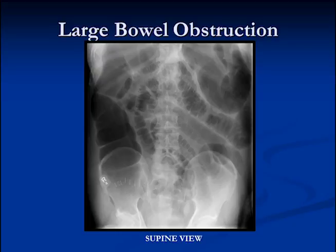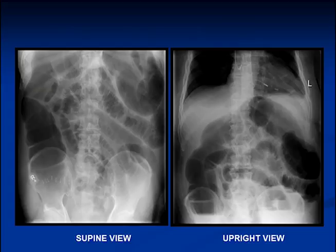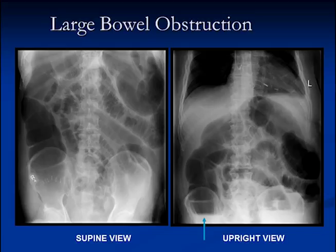The next case is a large bowel obstruction. Here you can see lots of distension of loops of small bowel and large bowel all the way around. There's no air in the rectum and no air in the descending colon, so we would imagine the obstruction is probably at the splenic flexure. We can identify large bowel because the haustra go only partway across, whereas the plica semicircularis of small bowel go all the way around. On an upright view, we can see air-fluid levels in both the large bowel and small bowel.